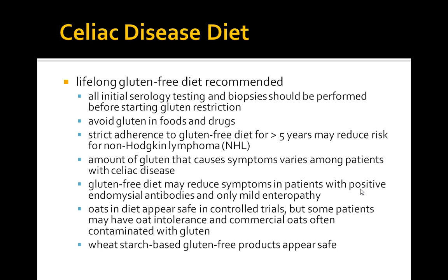All initial serology testing and biopsies should be performed before starting the gluten-restricted diet. Patients should have strict adherence to the diet, and those who adhere for greater than 5 years may show a reduced risk for non-Hodgkin's lymphoma, another association with celiac disease. The amount of gluten that causes symptoms varies among patients. A gluten-free diet may reduce symptoms in patients with positive endomysial antibodies and only mild enteropathy. Oats appear safe in controlled trials, though some patients may have oat intolerance. Wheat-starch-based gluten-free products also appear to be safe.